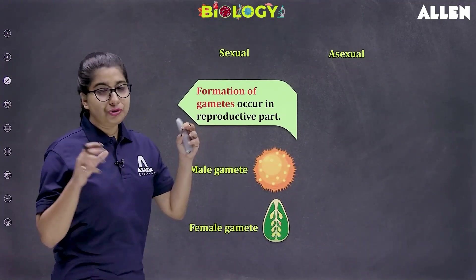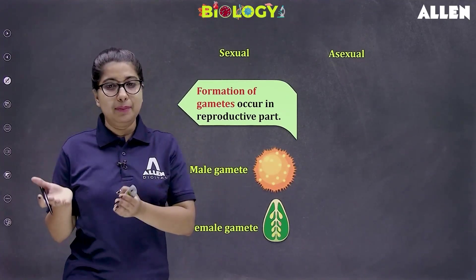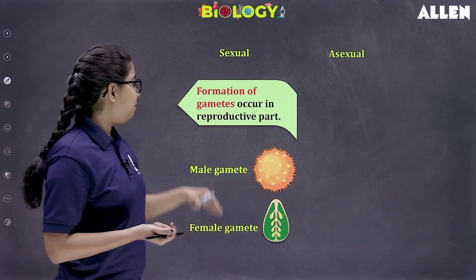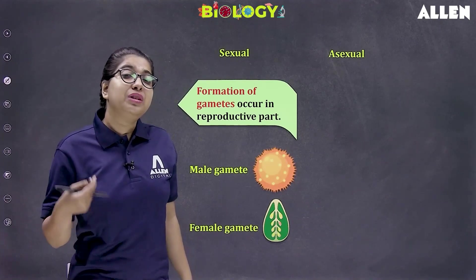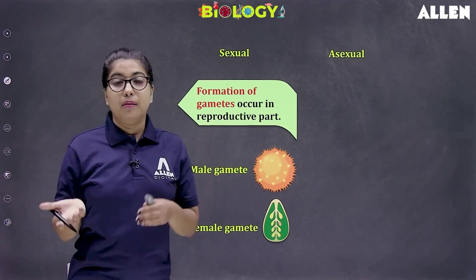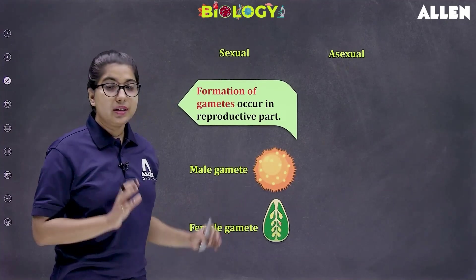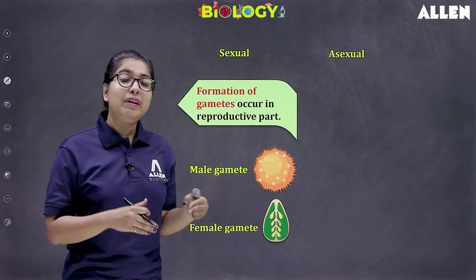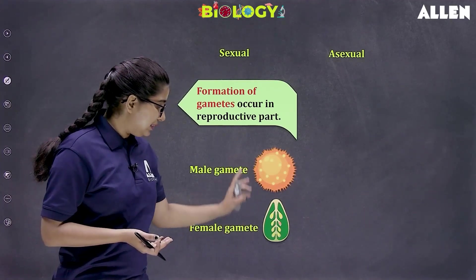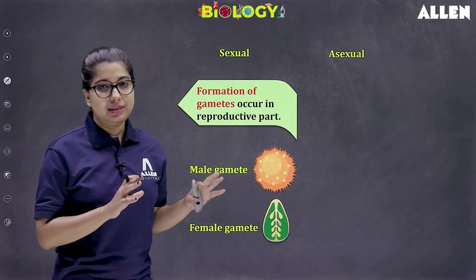Since two parents are involved in sexual reproduction, gamete formation will occur in their bodies. In the male parent's body, the male gamete would be formed; in the female parent's body, the female gamete would be formed. Formation of gametes occurs in the reproductive parts. If I talk about human beings, in the male human body the male gamete would be formed in the male reproductive system. You can see here — this is a male gamete. In the female human, in the female reproductive system, the female gamete would be formed, also known as the egg. These diagrams shown are actually of plant gametes.